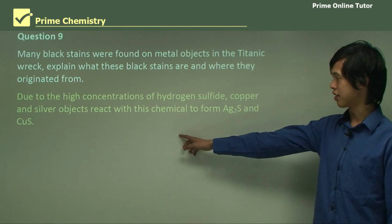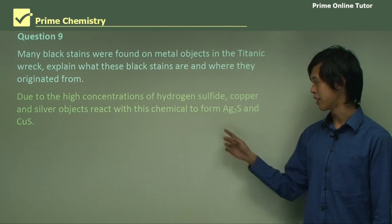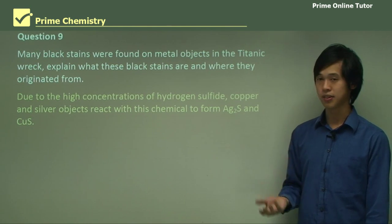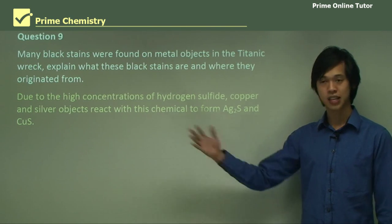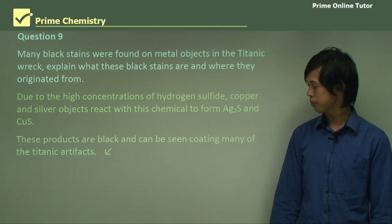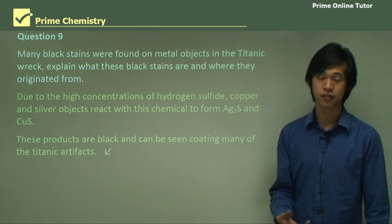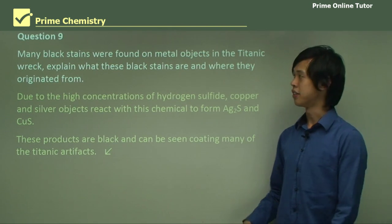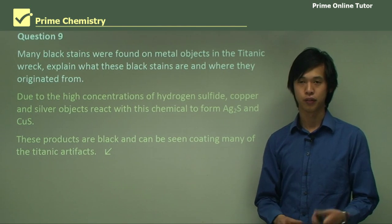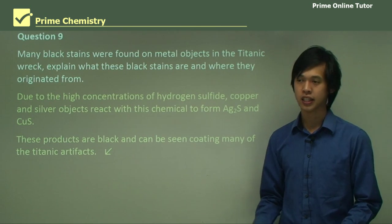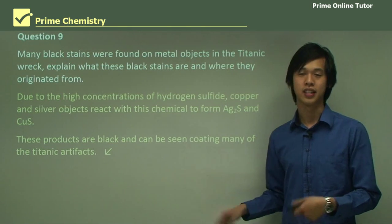Because of the high concentrations of hydrogen sulfide, copper and silver objects react with this chemical to form Ag₂S and CuS. The silver and the sulfur come together and you get that black stain — the same with copper as well. These products are black and can be seen coating many of the artefacts of the Titanic. So this question was quite vague, but if you have experience with silver — particularly as a flute player or user of silver cutlery — and given that we've been talking about sulfur throughout this series, you could have answered it.